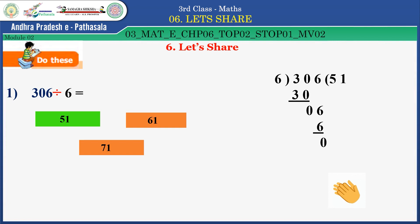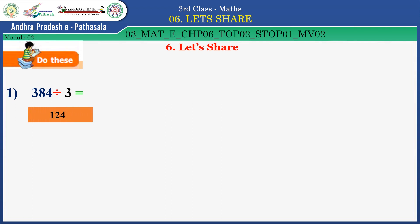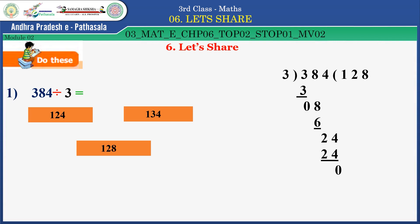Now look at the next division. Children, now look at this division: 384 divided by 3. You do this division and say the correct answer. How much did you get — 124, 134, or 128? Let us see the division. After doing this division, how much did you get? Yes, very good children — 128.